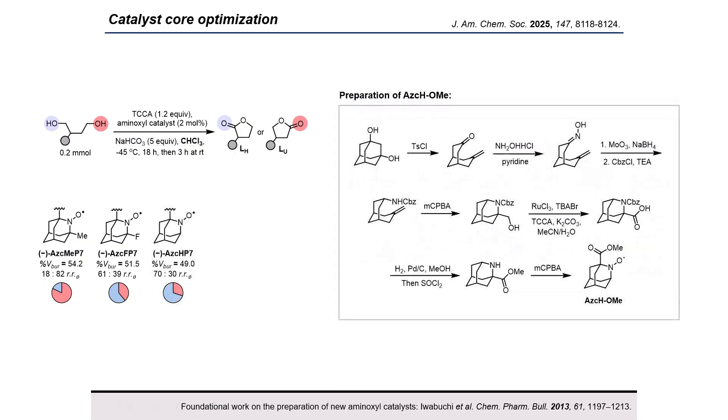Further swapping out the fluorine for a proton actually gave a similar selectivity across the screening substrates, but upon a solvent screening we identified chloroform as a superior solvent, which boosted the average selectivity with ASC-H to 70% for the more hindered site.